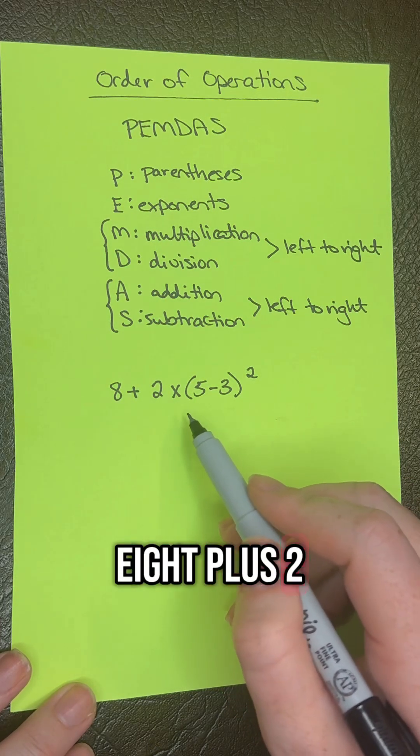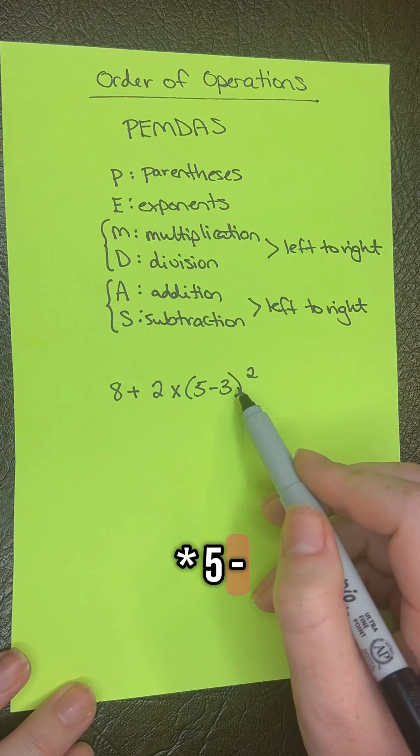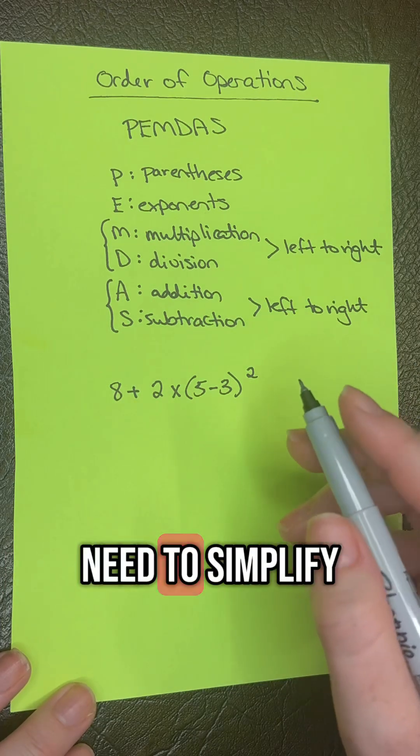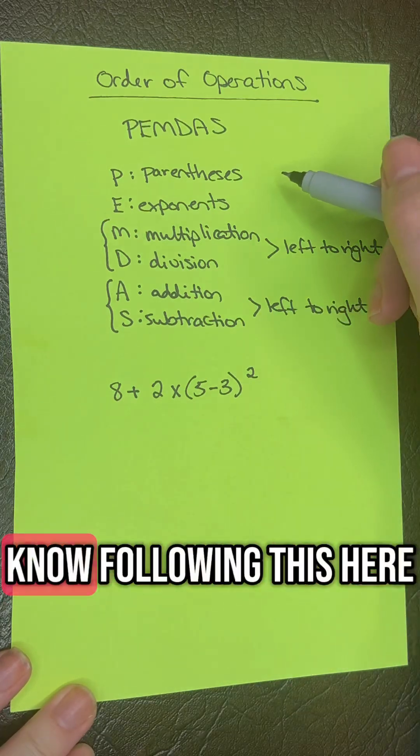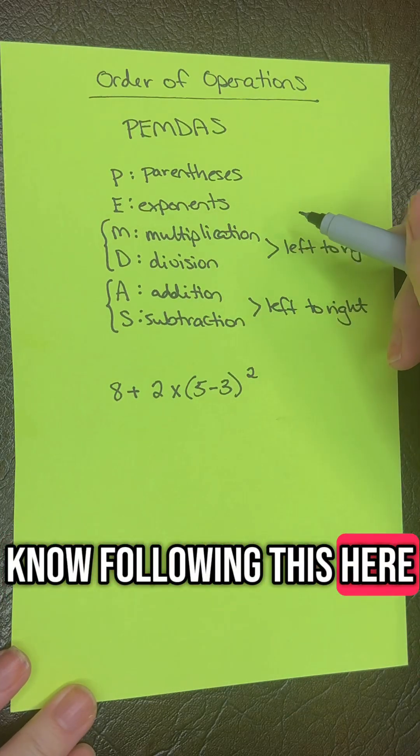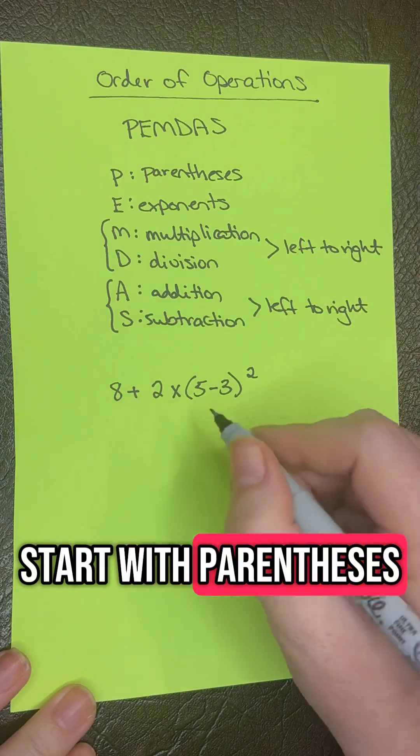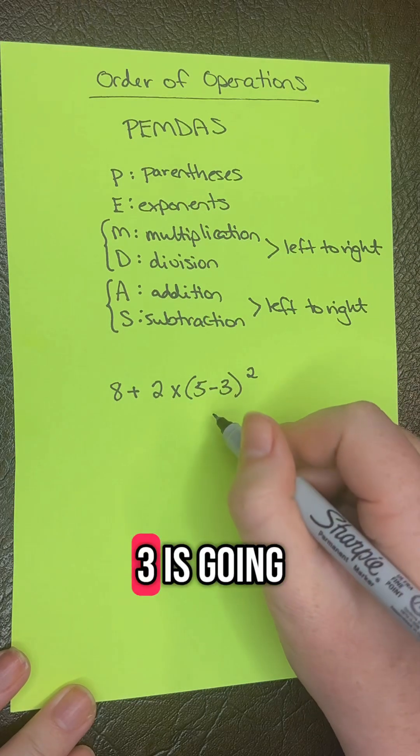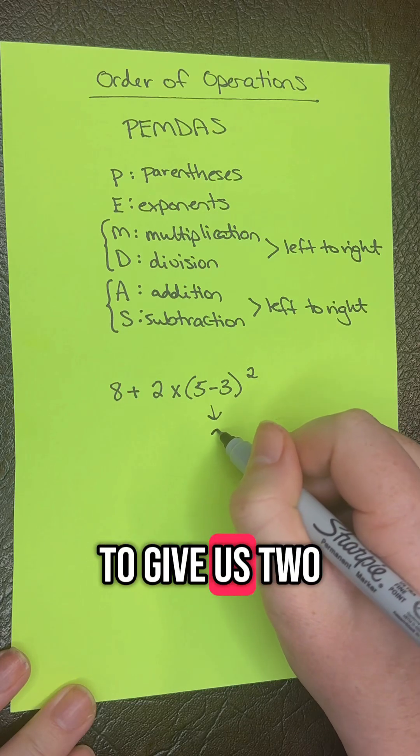8 plus 2 times (5 minus 3) squared. We need to simplify this. Following PEMDAS, we start with parentheses, so that would be 5 minus 3, which gives us 2.